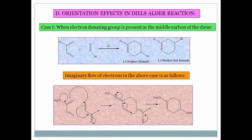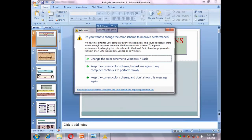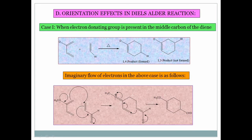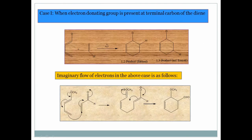For the orientation of substituents in the Diels-Alder reaction: in case one, if an electron-donating group is present at the middle carbon of the diene, the 1,4-product (para product) is formed as the major product and the 1,3-product is not formed. This can be explained using the push-pull mechanism — the electron-donating group such as methoxy pushes electrons, and the dienophile pulls them, giving the 1,4-product as the major product.